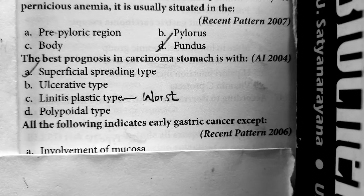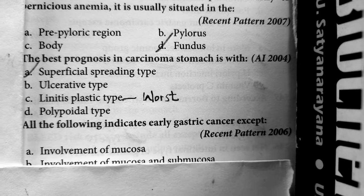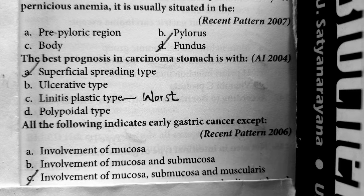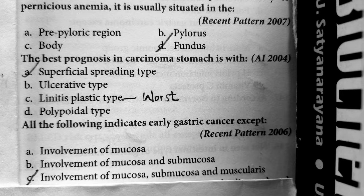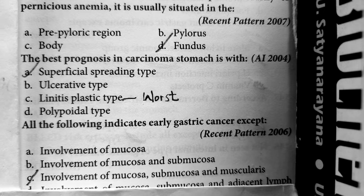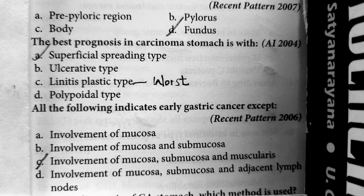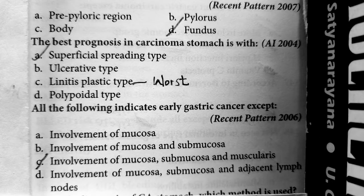Question 4: All of the following indicate early gastric cancer except — involvement of mucosa is early gastric cancer; involvement of mucosa and submucosa is early gastric cancer. However, once the gastric cancer has crossed the submucosa and entered the muscularis, it is late or advanced gastric carcinoma, not early gastric cancer. Involvement of mucosa and submucosa with adjacent lymph nodes is still early gastric carcinoma. Early gastric carcinoma is defined as involvement of mucosa and submucosa with or without lymph nodes.